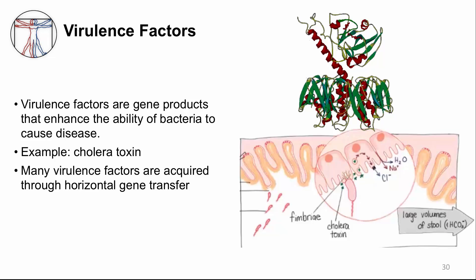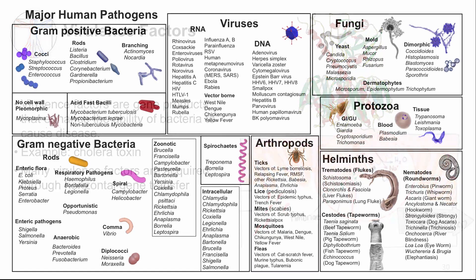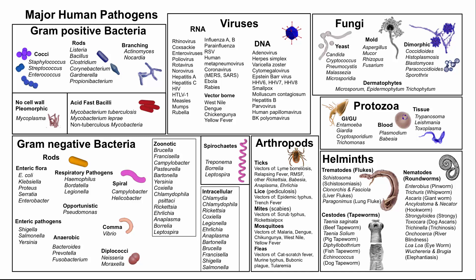There are many specialized molecules involved in disease that are usually not essential to bacterial survival. We call these virulence factors because they enhance the ability of bacteria to cause disease. One example is the protein Vibrio cholerae produces to induce massive watery diarrhea — cholera toxin — which can quickly lead a person to dehydration through the action of a single molecule with a very powerful biological effect. Many virulence factors are shared through horizontal gene transfer.